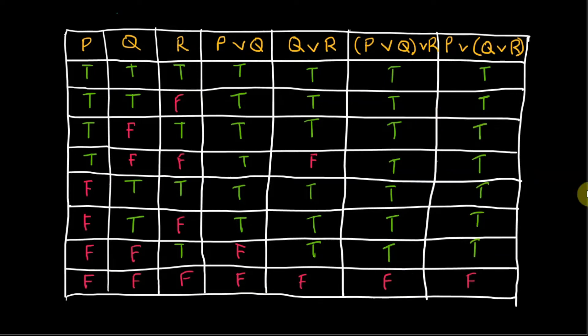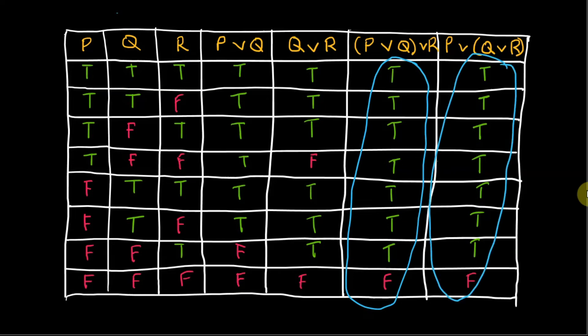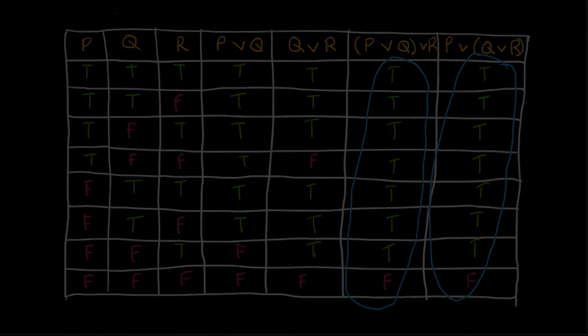The columns for p or q or r is similar to p or q or r, which implies that the first logical equivalence of associative law is valid.